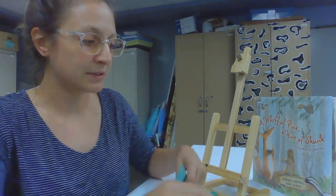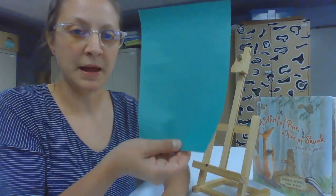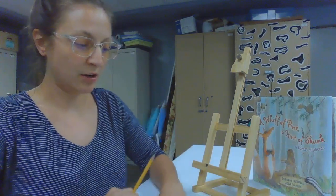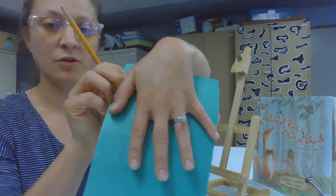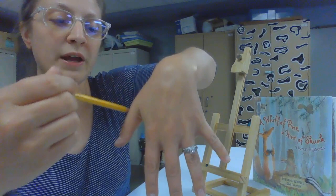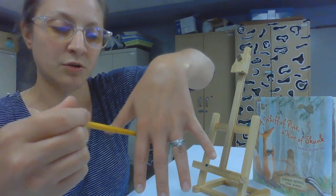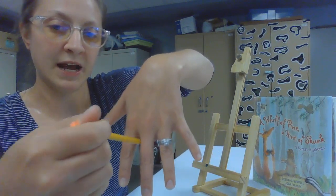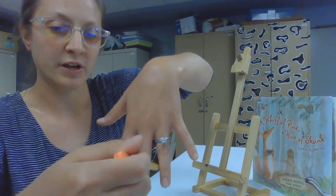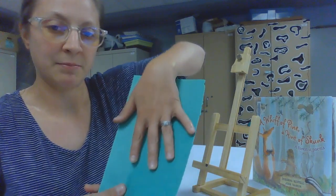So the first step is to take your green paper, and you want to put your hand on the paper, like so, and you want to trace all the way around your fingers. So all your fingers spread about nice and wide, and trace them on your green paper, just like that.